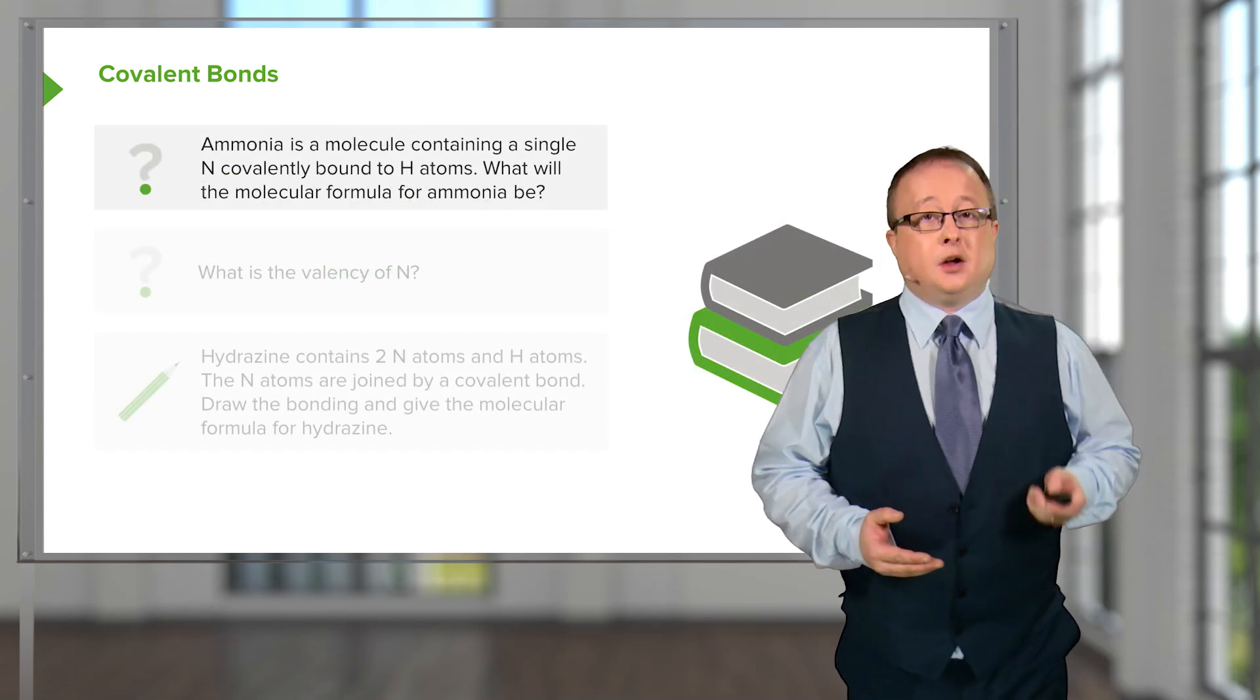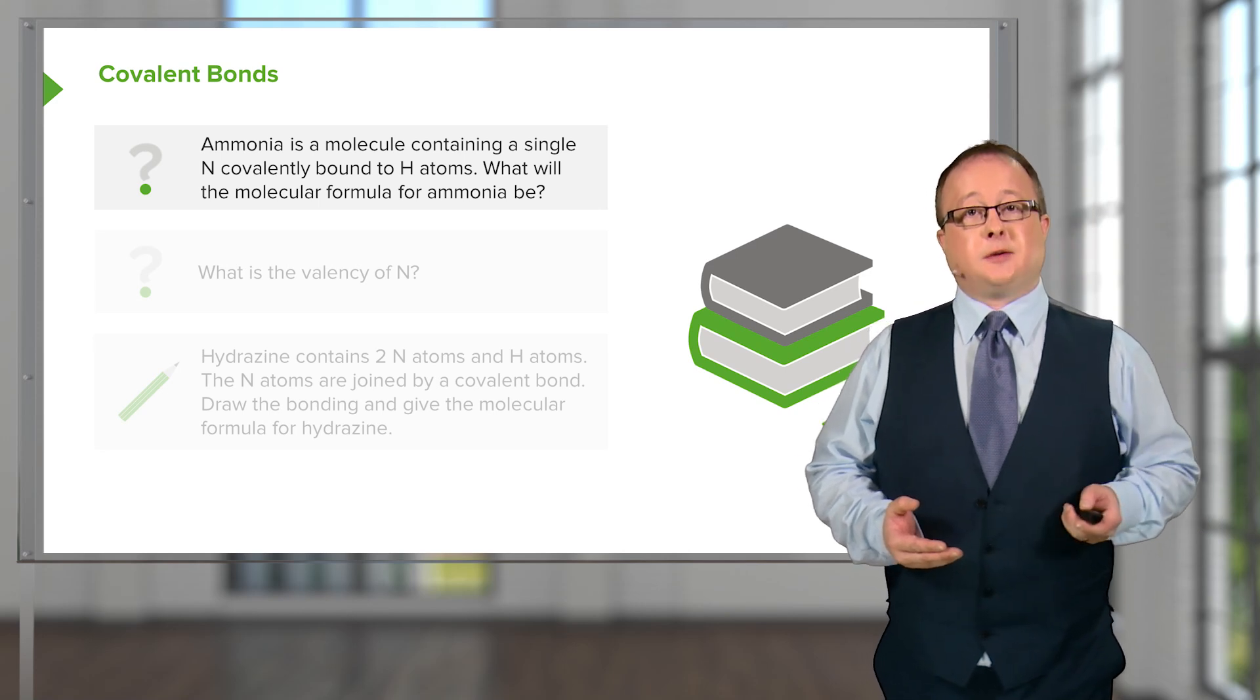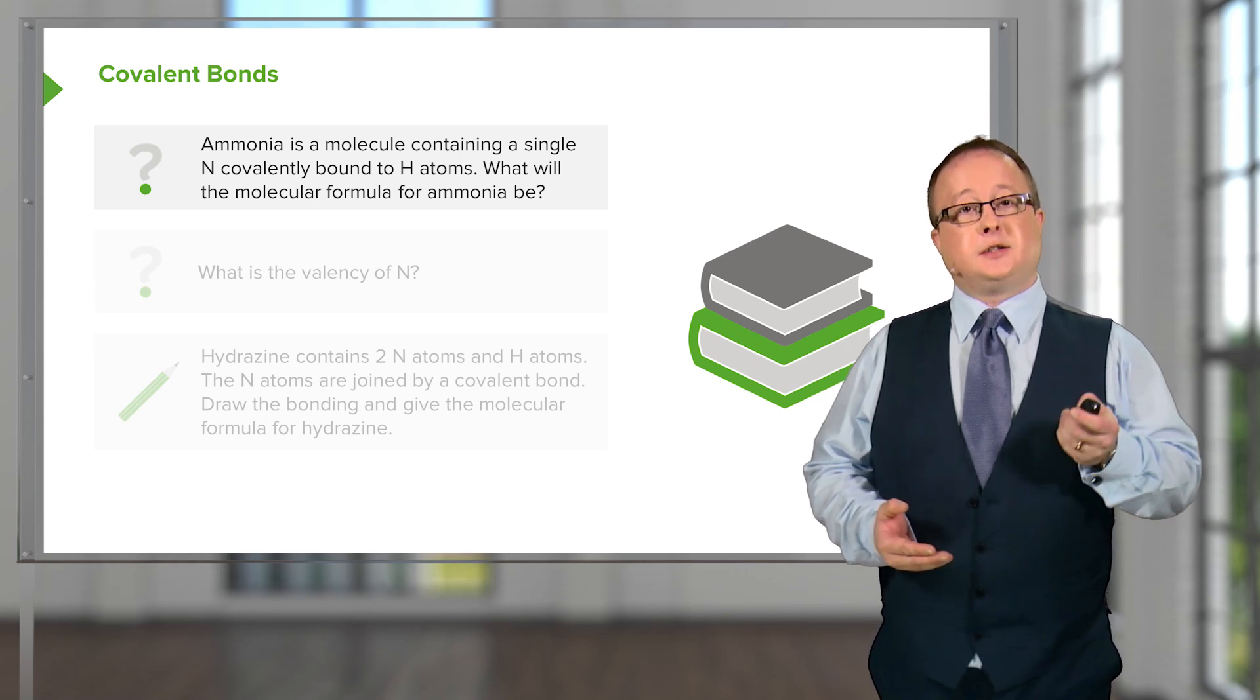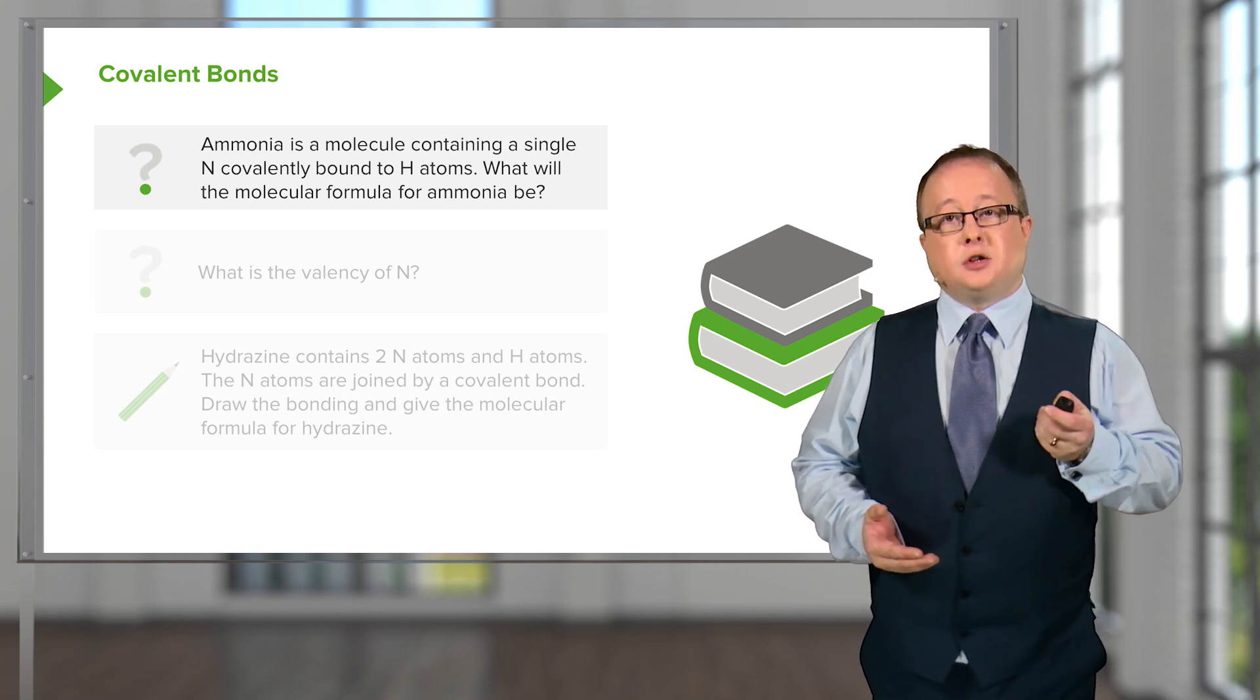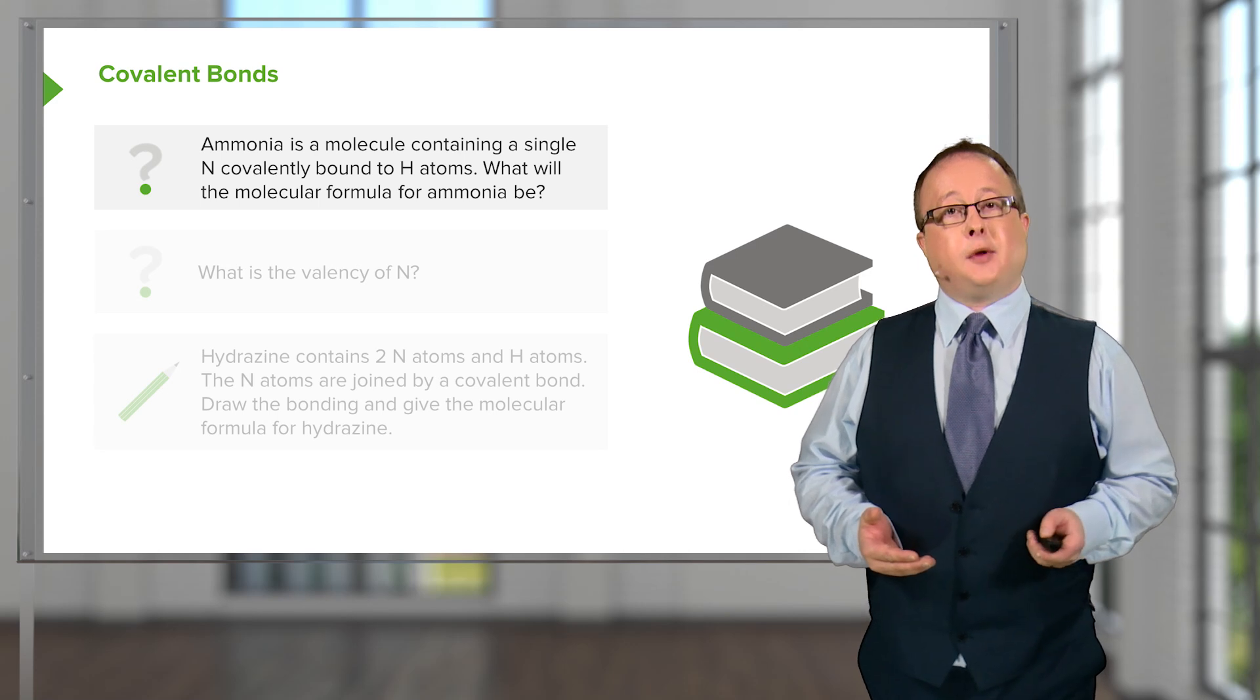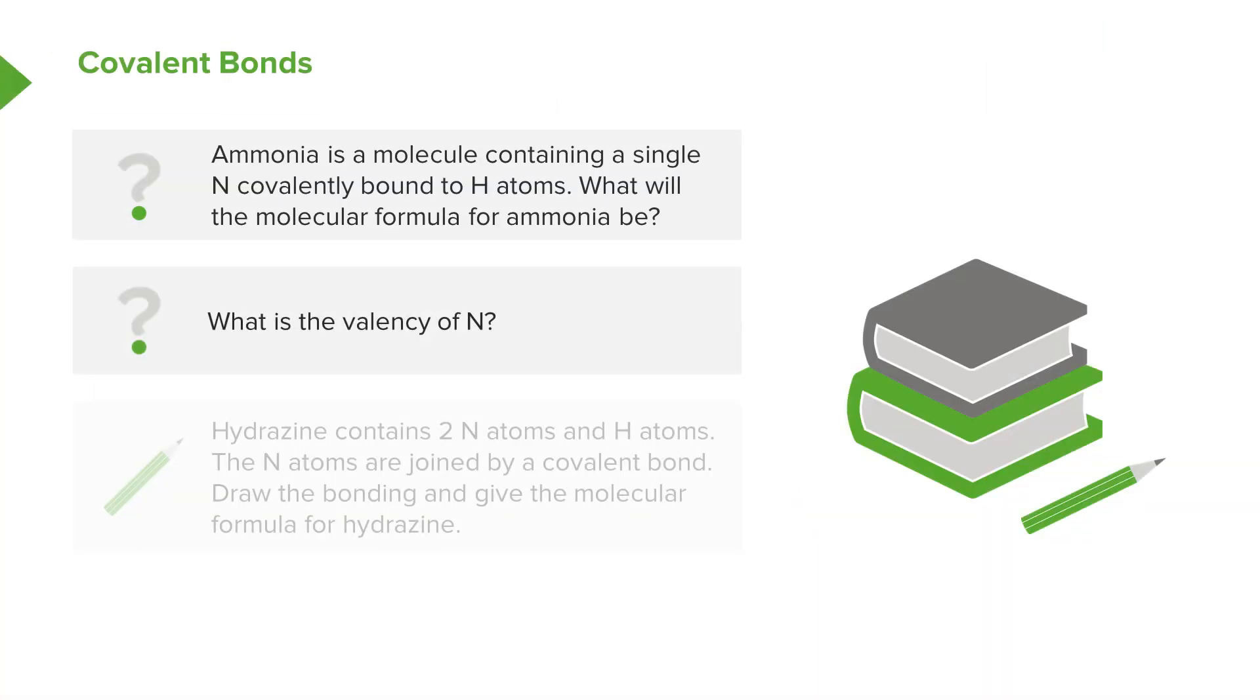So, question for you. Ammonia is a molecule that contains a single nitrogen covalently bound to hydrogen atoms. What will the molecular formula for ammonia be? What therefore is the valency of nitrogen?